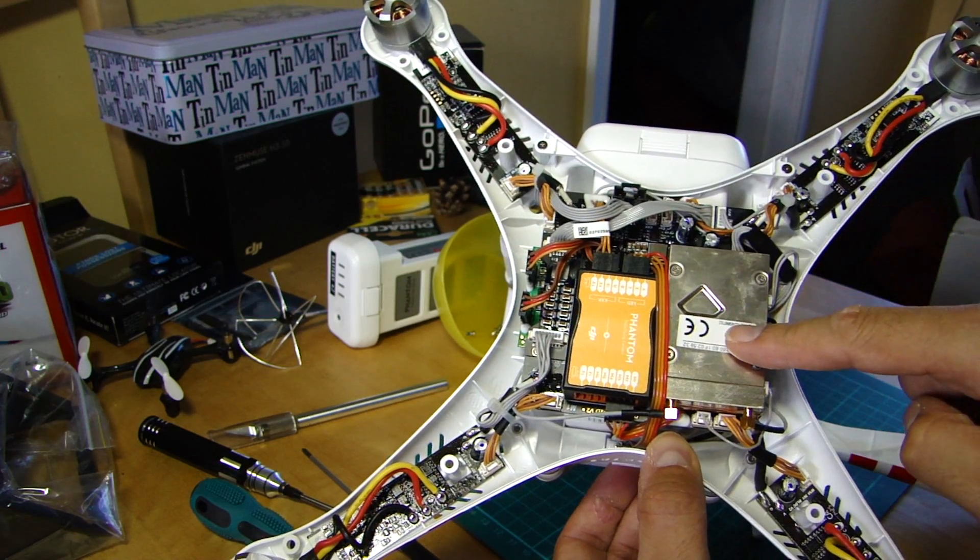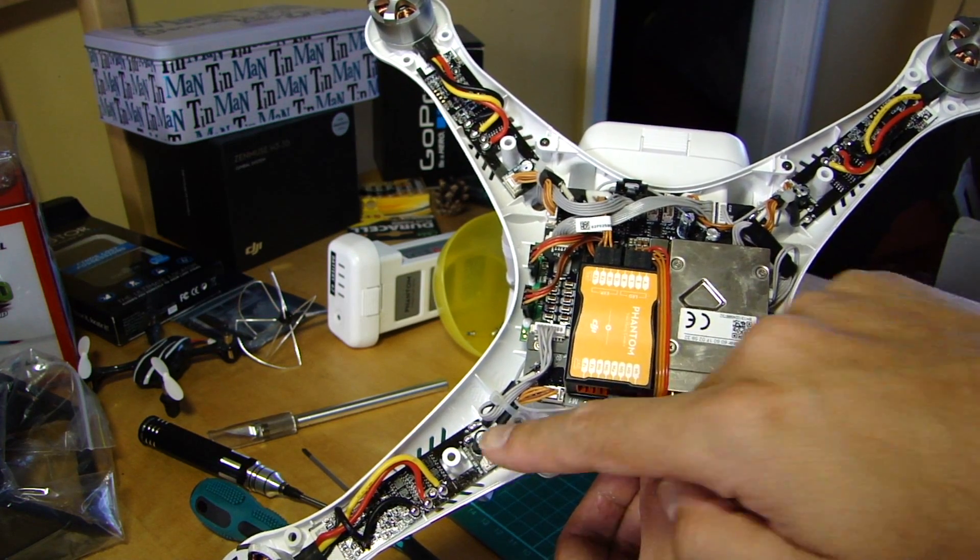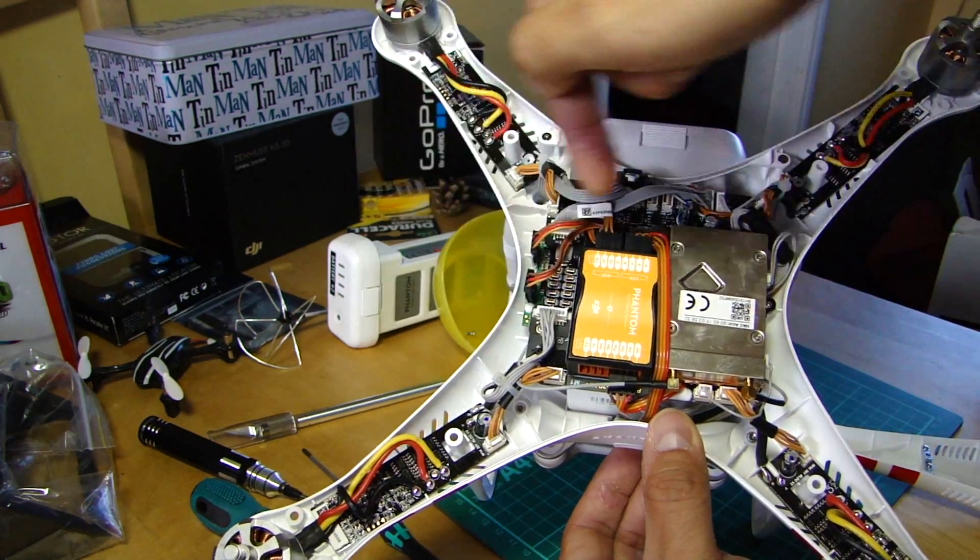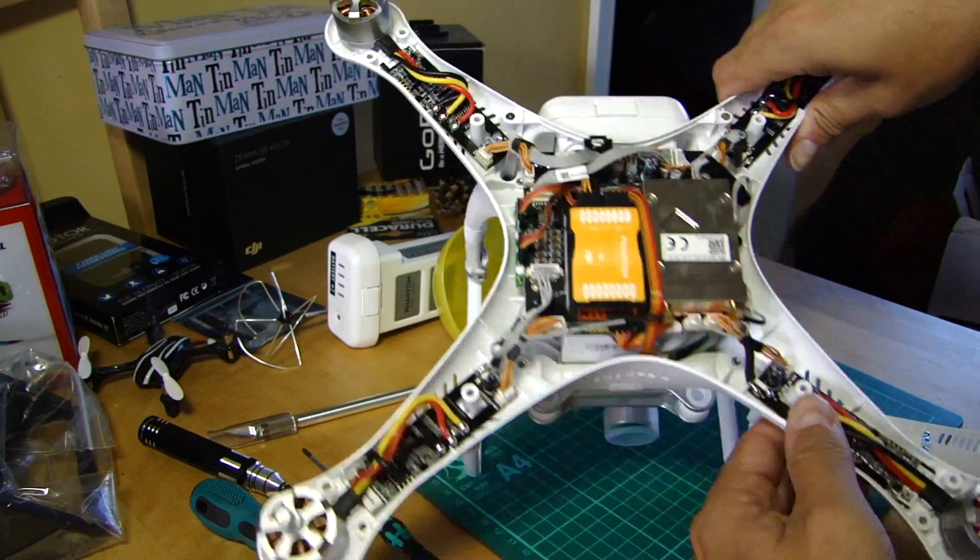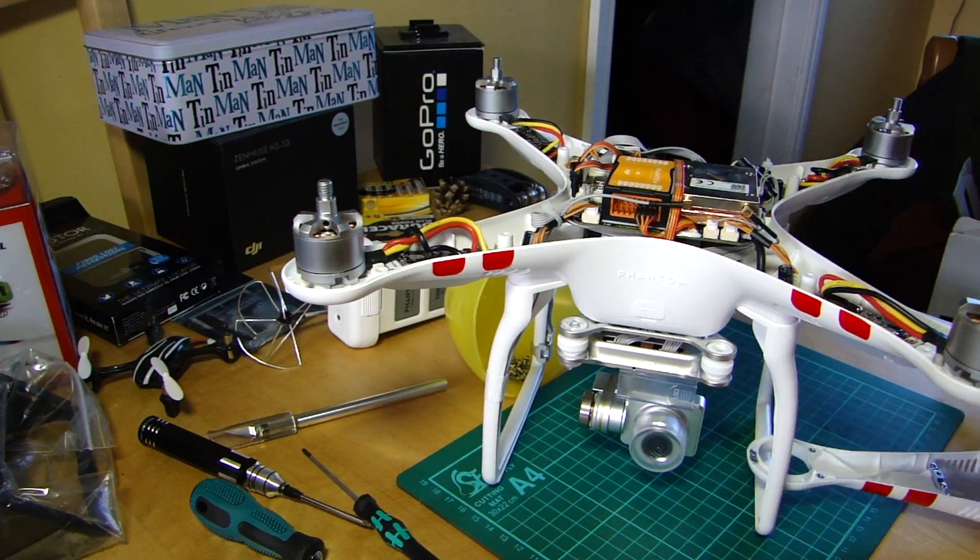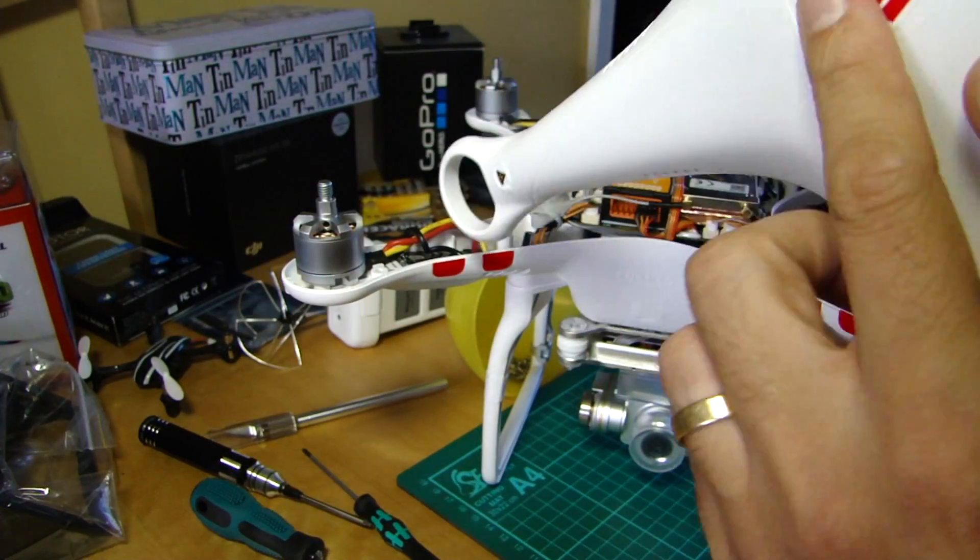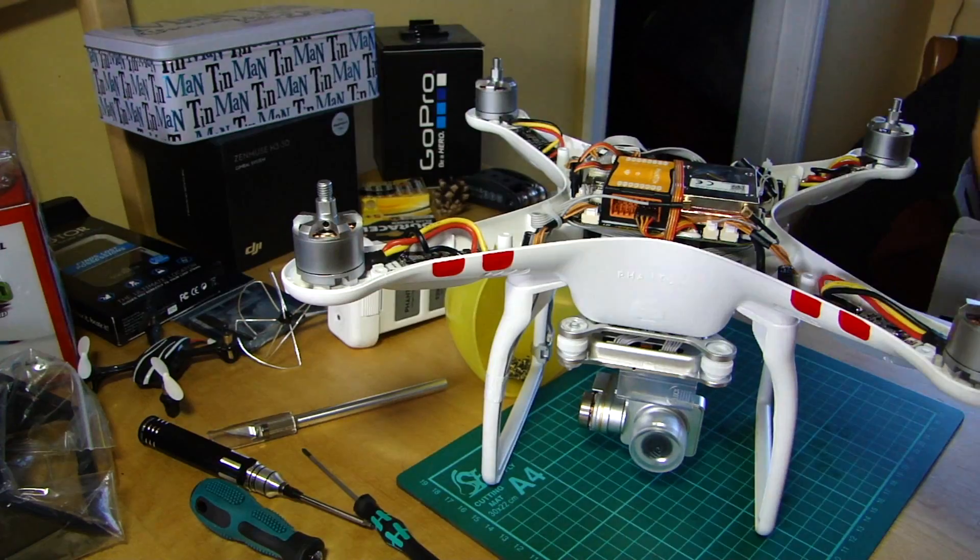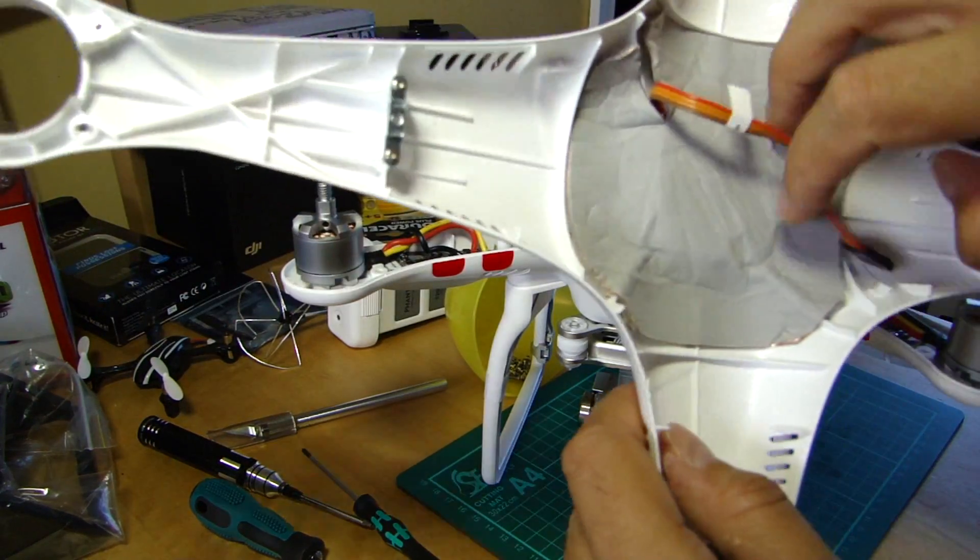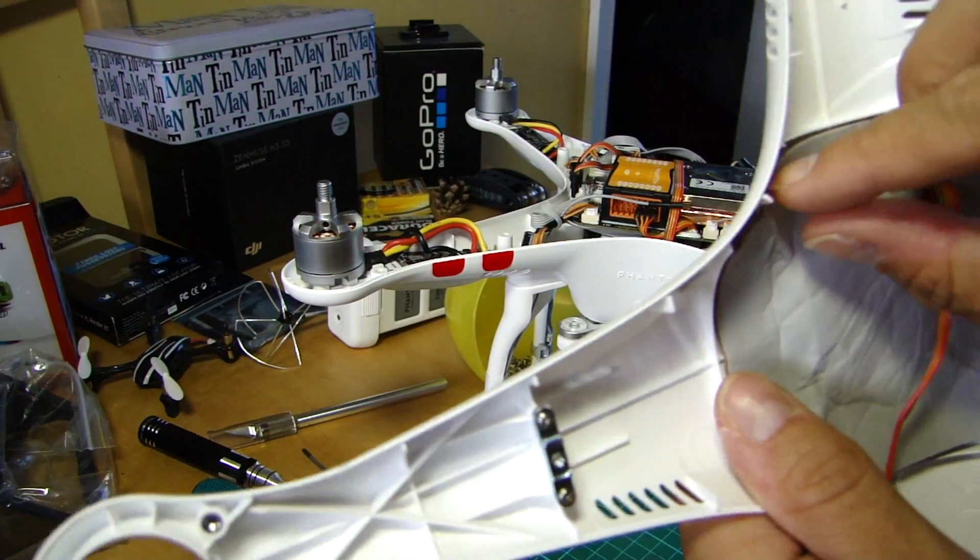And then this plug here that I've removed was where the GPS plugs in. Obviously you've got the speed controllers and the receivers and everything else under there. So as you can see underneath here, this is your GPS receiver unit which obviously is looking skywards up through the shell. This is the cable that comes out of it.